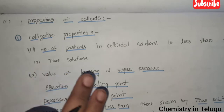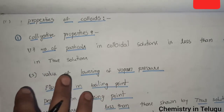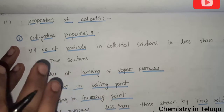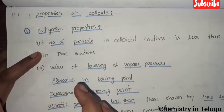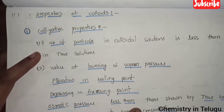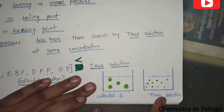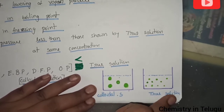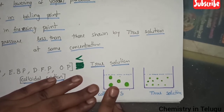Welcome to this video on properties of colloids. Here are the main properties of colloids. Let's talk about the main properties of colloids. First, let's talk about the colligative property. Colligative property is one of the main colloid particle properties. Here are the colloid particles.